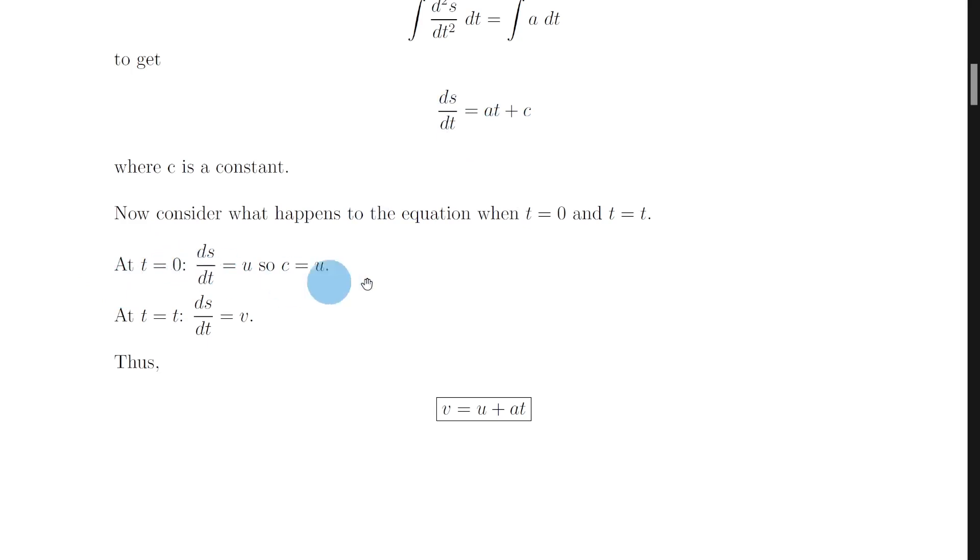But remember at time t equals zero, we're going to have the initial velocity u. So we can say that ds by dt will be equal to u when t equals zero. And therefore c is equal to u. Because we've said that ds by dt is equal to u, but it's also equal to c. So that means that c must also equal u.